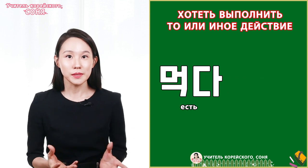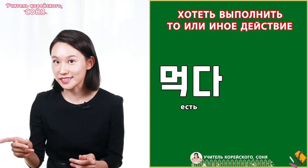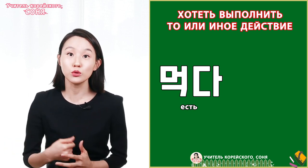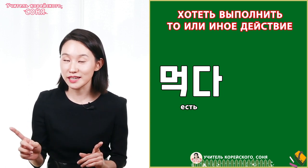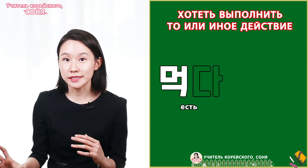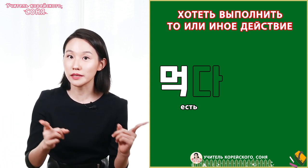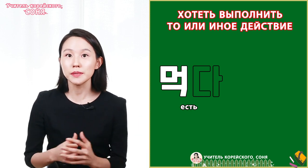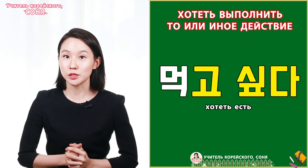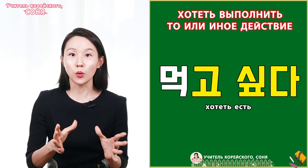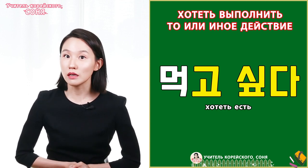Например, у нас есть глагол мокта — помните? — «есть» или «кушать». Как можно сказать «хотеть есть»? Легко и просто. Вместе попробуем: сначала отбросим окончание -кта. И к основе глагола, то есть к мок, мы прибавляем -го-сип-та. Так что «хотеть есть» по-корейски — 먹고 싶다. Вот так мы и говорим.